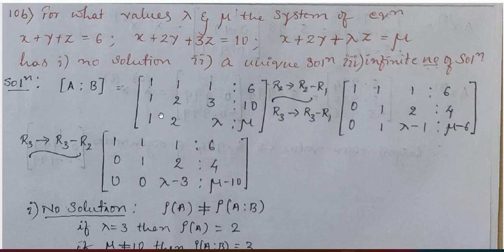I am going to find the upper triangular matrix. I applied R2 changes to R2 minus R1 and R3 changes to R3 minus R1 to get a new matrix. Then to make this value 0, I applied R3 minus R2 and obtained this matrix.